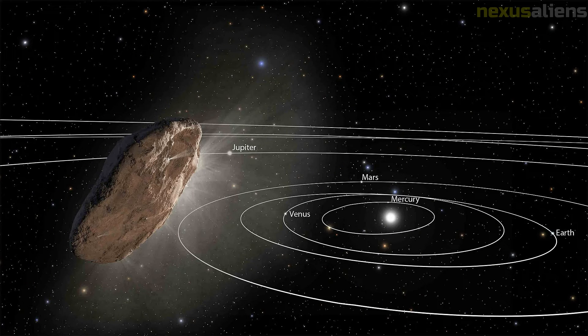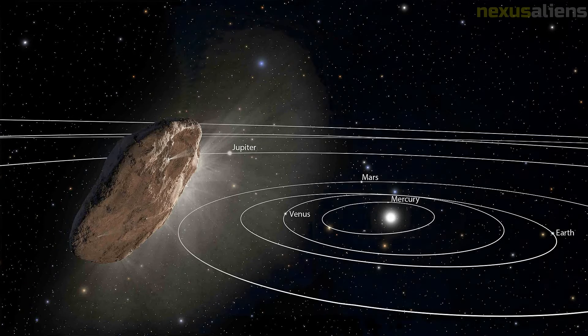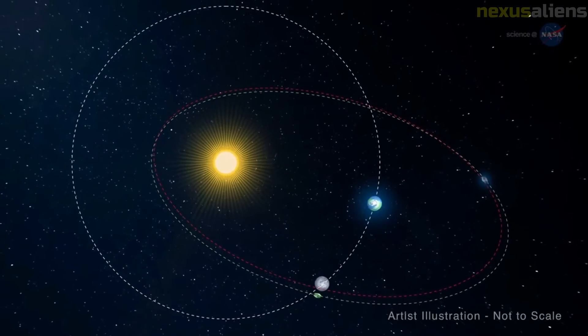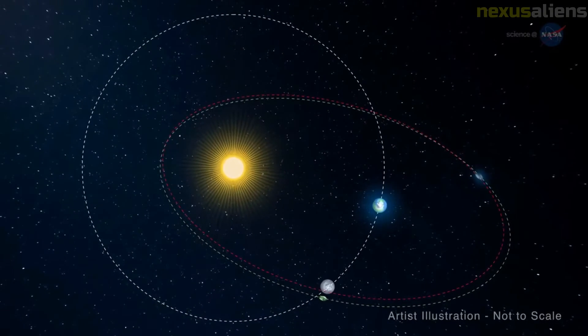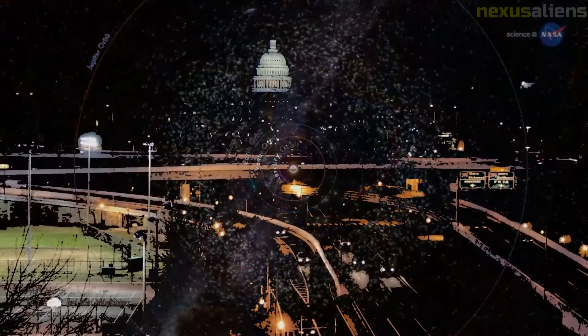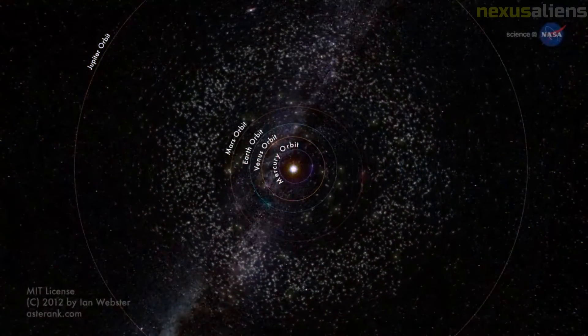According to one hypothesis, Oumuamua could be a fragment from a tidally disrupted planet. If true, this would make Oumuamua a rare object, of a type much less abundant than most extrasolar dusty snowball comets or asteroids. This scenario leads to cigar-shaped objects whereas Oumuamua's light curve favors a disc-like shape.